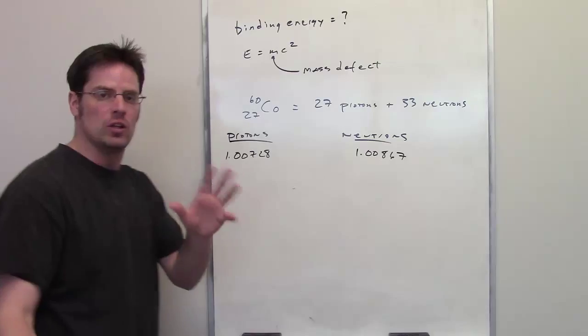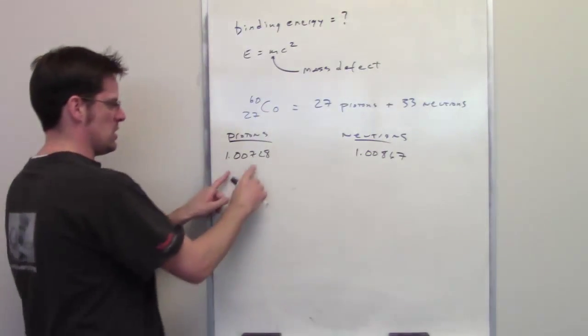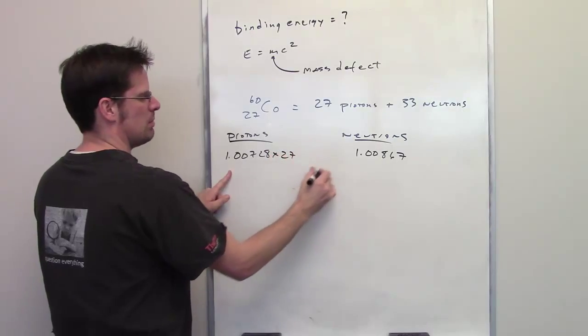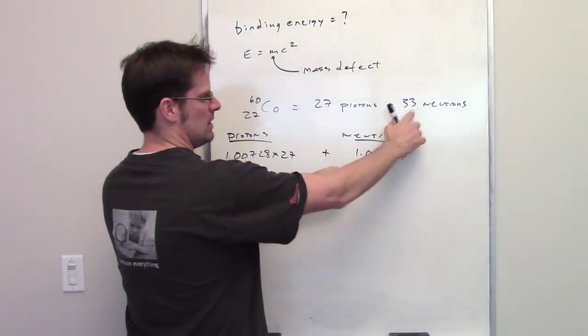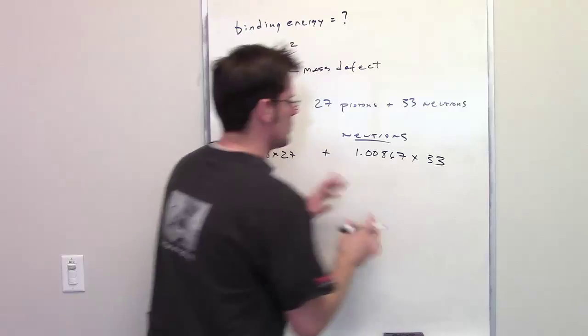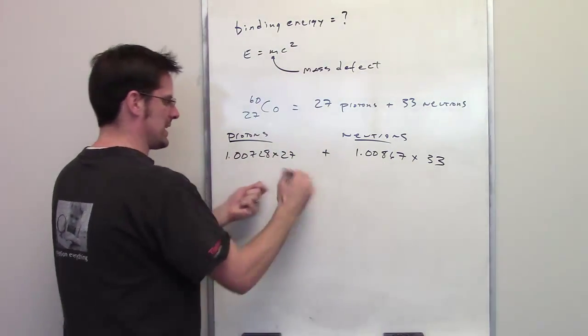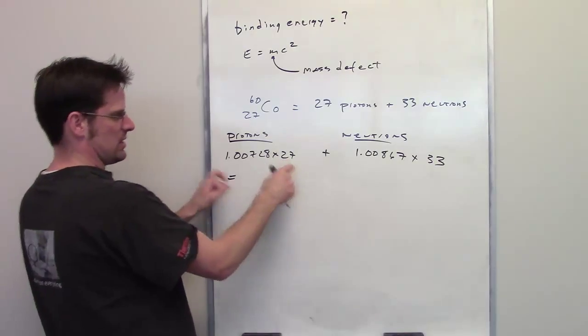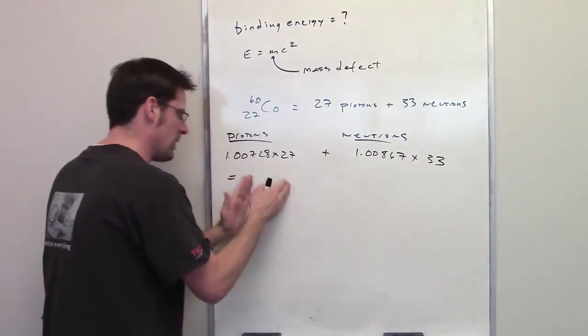Now, the cobalt nucleus should weigh this number times 27, plus this number times 33. So what we're going to do is throw this into our calculator and determine what that number is. This number of protons times 27, number of neutrons times 33. What does that come out to be?